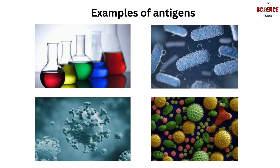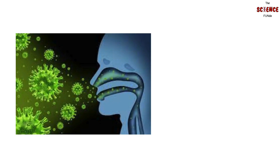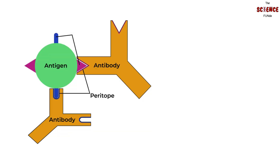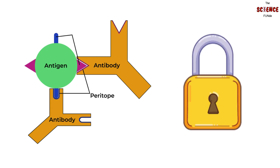The body produces antibodies in response to foreign substances or antigens that cause an immunological response. For example, when the common cold virus enters the body, the body produces antibodies to protect itself against illness. In simple words, the antigen is the key, hoping to enter into and infect a cell. The antibody is the lock that grips and locks the key, preventing it from entering and infecting cells.